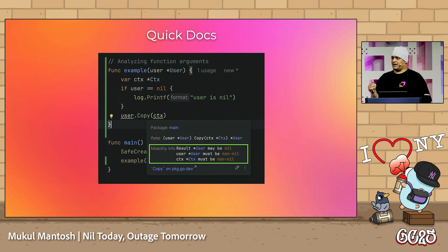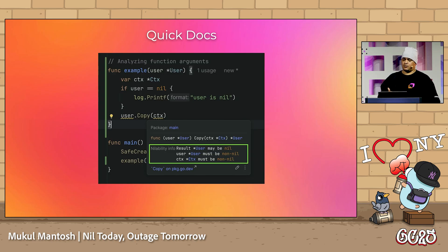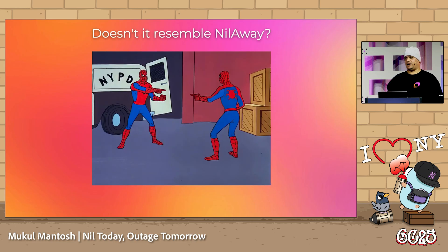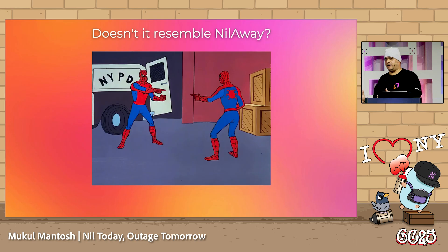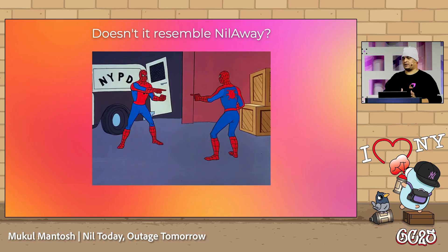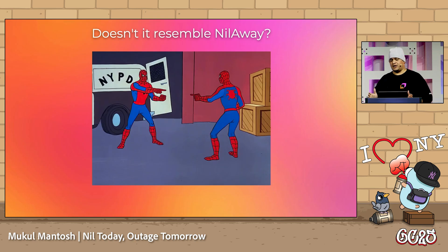We've made this information easy to access — that's where we put the nilability information in the quick documentation, so you can check that out. By this point, most of you are probably wondering if this is similar to NilAway. NilAway is a great tool, but our solution is different. NilAway is good for use with CI/CD or the terminal, while GoLand's DFA interprocedural analysis works inside GoLand — you don't need to go anywhere.